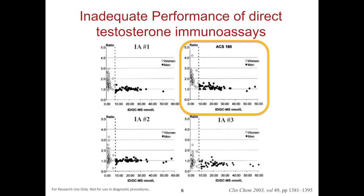It's not just men with prostate cancer undergoing androgen deprivation therapy where accurate low-level testosterone matters. These measurements are important in women, especially as part of the workup for polycystic ovary syndrome, and for children who generally fall into these low testosterone ranges. Accurate quantitation is important in cases of precocious or delayed puberty, unexplained virilization, and newborns with ambiguous genitalia. All of these situations represent scenarios where accurate low-level testosterone measures are critical.